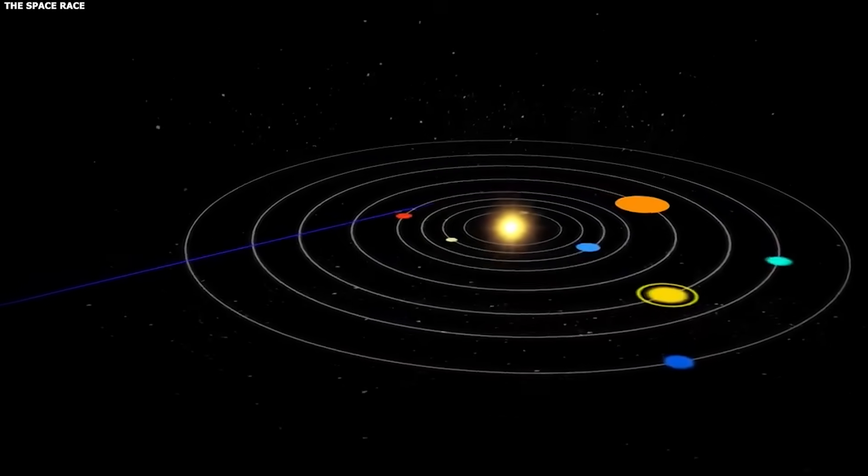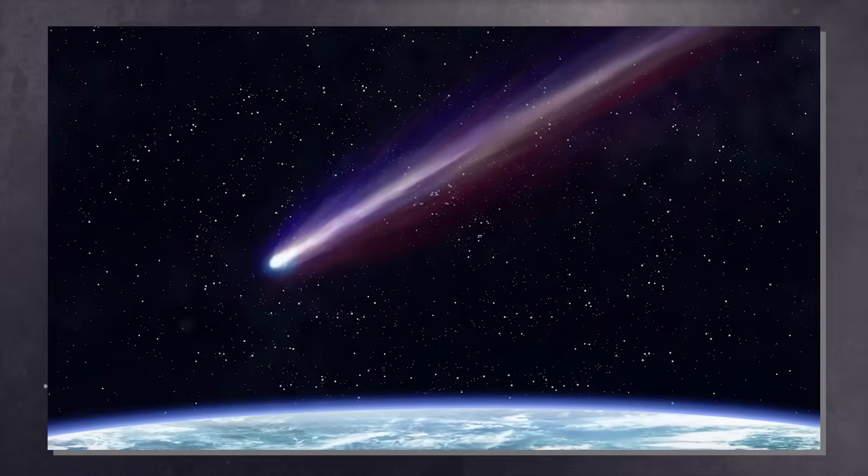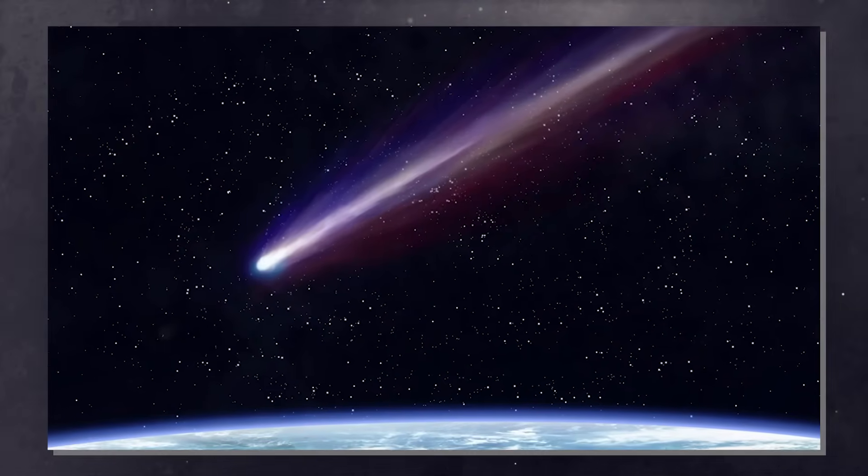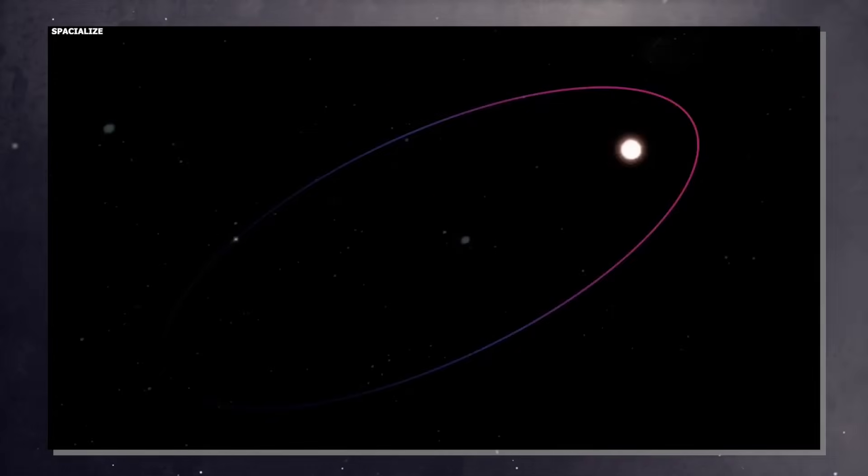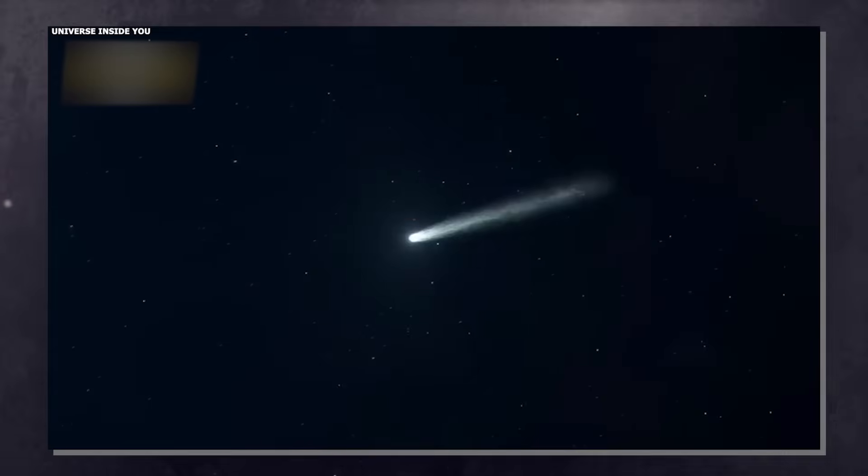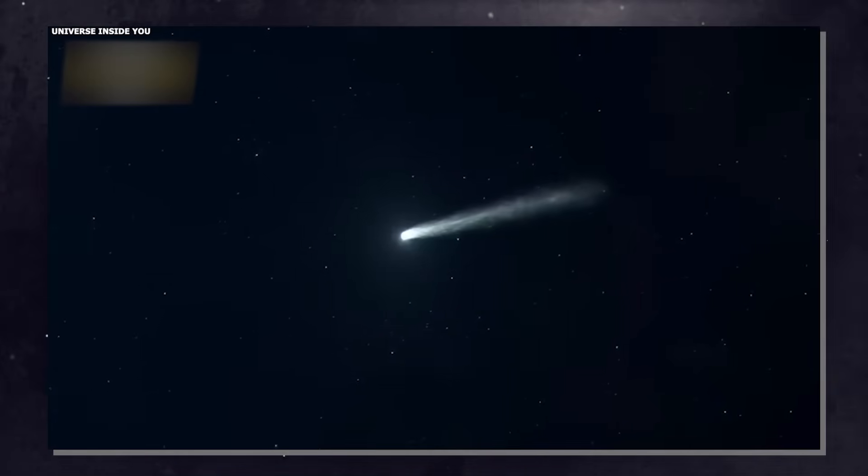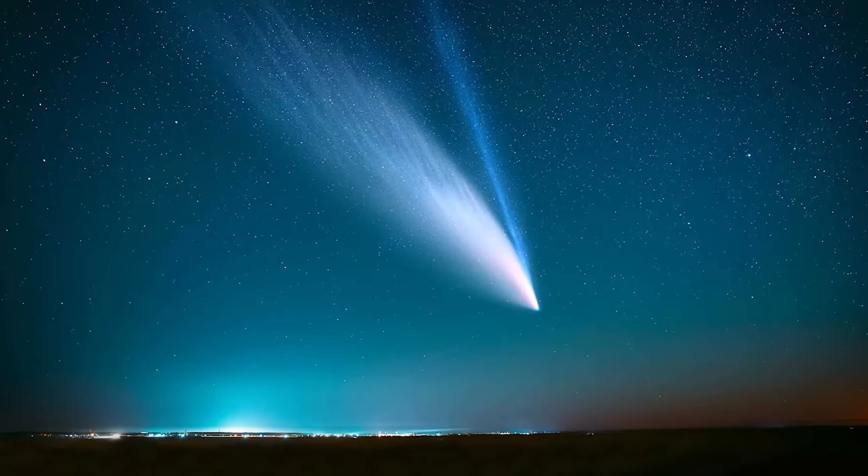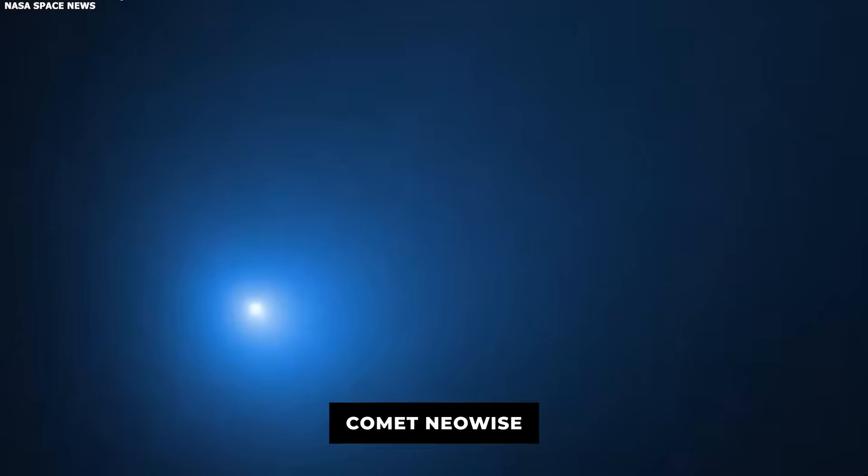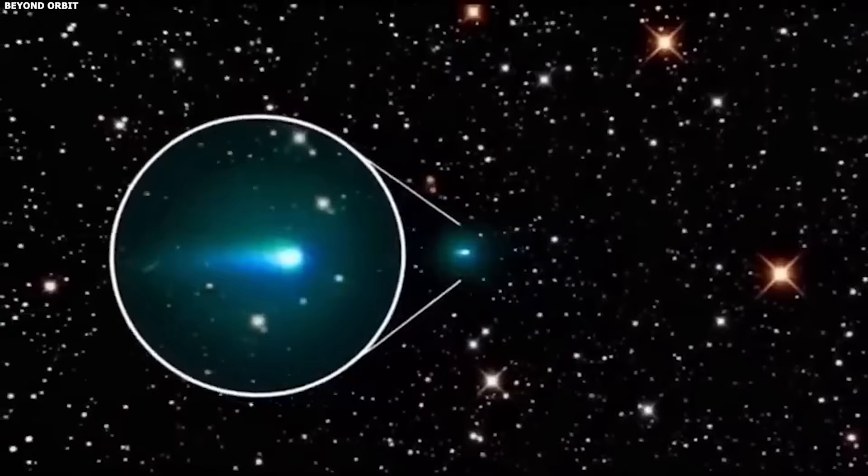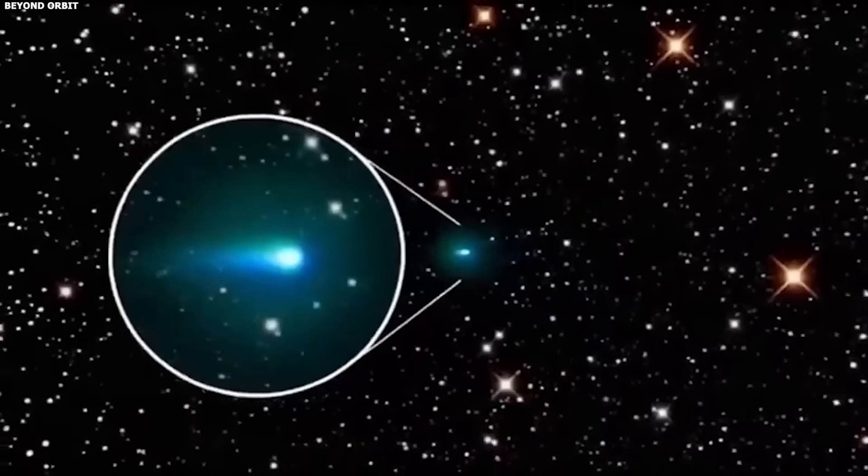This is why comet tails always point away from the sun. It doesn't matter which direction the comet is moving. The tail points away from the sun. When the comet is approaching the sun, the tail trails behind it. When the comet is leaving the sun, the tail goes in front of it, but it always points away. You can see this in every famous comet photo. Halley's Comet, Comet Neowise, Hale-Bopp. The tail is always on the side opposite the sun.